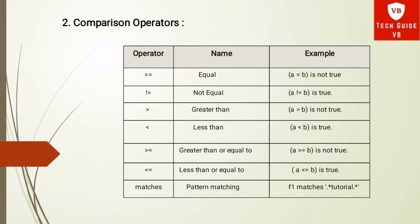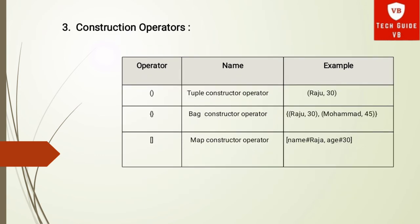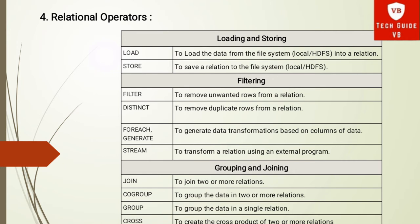The next operator is the construction operator. There are three types. The first is the tuple constructor operator, used to construct a tuple — for example, (name, age) of a student, where name and age are a set of fields. The second is the bag constructor operator, used to construct a bag, which is a collection of more than one set of tuples. The third is the map constructor operator, used to construct a map using a key (field name with a hash key) as shown in the example.